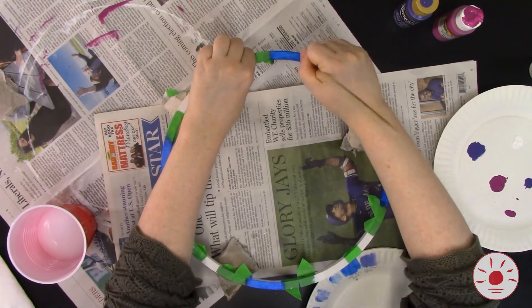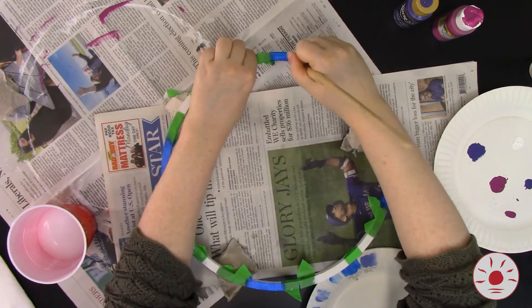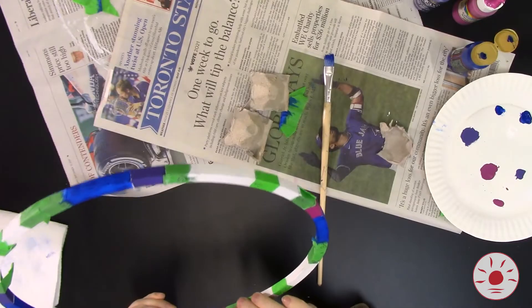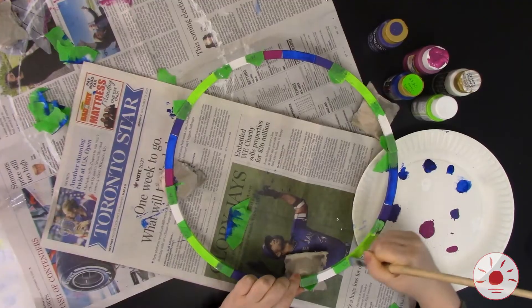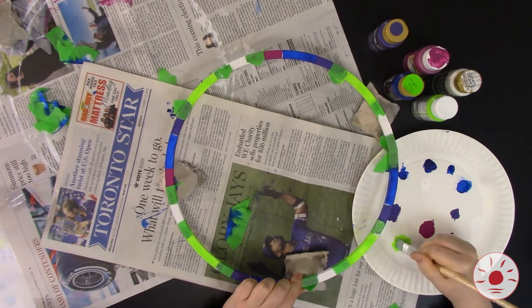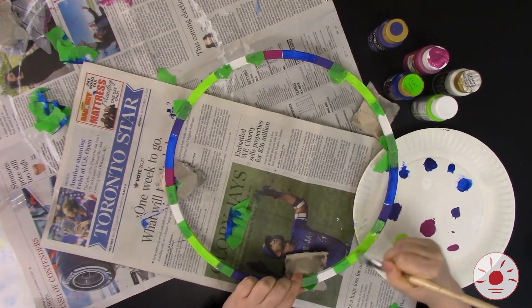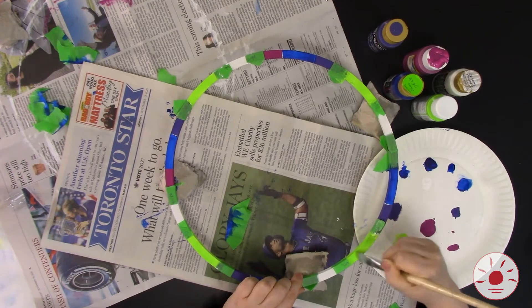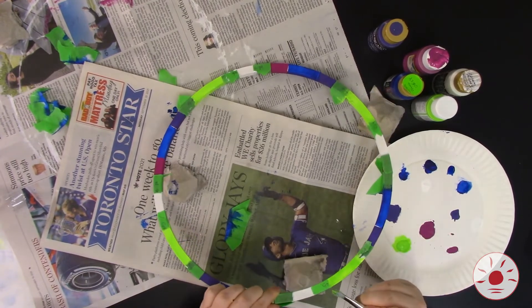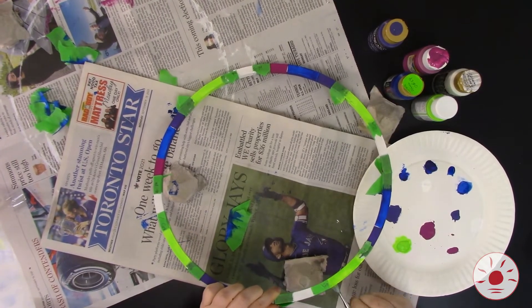Here I'm going to use 5 different colors. Blue, this pinky red sort of color, purple, green, and I'm going to leave the last section in the pattern white. This means my colors are going to repeat 4 times because 5 goes into 20 4 times.